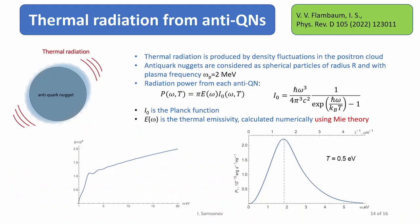We reconsidered this problem. We consider the anti-quark nugget or quark nugget as a nanoparticle. In this case, the power of radiation is given by this formula. I_0 is a standard Planck function. And this function E is the so-called thermal emissivity function. There is a procedure how to calculate this function. It's called Mie theory. We did this calculation. This is the result of our calculation.